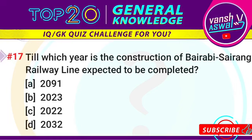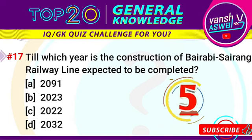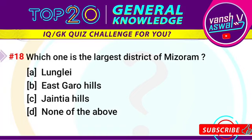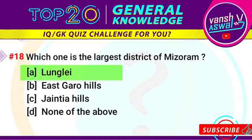Question number 17: till which year is the construction of the Bairabi-Sairang railway line expected to be completed? The right answer is 2023. Question number 18: which one is the largest district of Mizoram? The right answer is Lunglei.